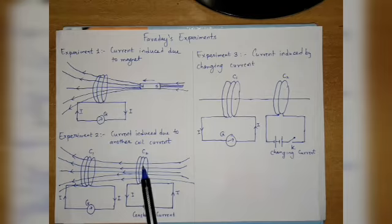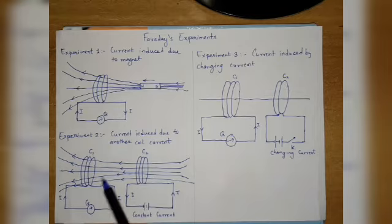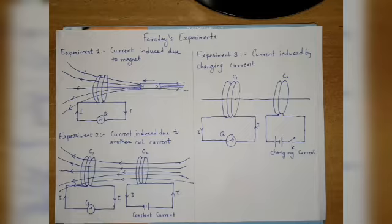is moved towards coil C1, the galvanometer shows sudden deflection. This indicates that electric...